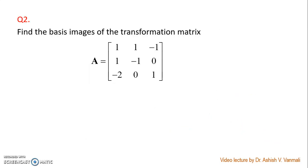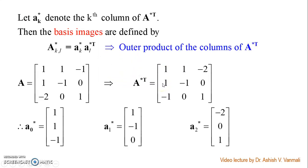Now consider the second problem: find the basis images of the transformation matrix A, which is [1, 1, -1; 1, -1, 0; -2, 0, 1]. The basis images are again the outer product of the columns of A conjugate transpose. Since A is real, A equals A conjugate. The transpose of A is [1, 1, -2; 1, -1, 0; -1, 0, 1].